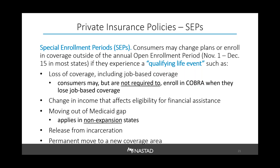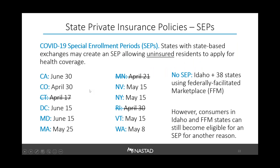Even if someone already receives premium tax credits, when their income is reduced they can still update their marketplace application to see if they're eligible for a higher tax credit amount or for Medicaid. In addition to regular SEPs, a number of states have created SEPs specifically to address uninsurance during COVID-19, giving uninsured residents a special opportunity to apply for health coverage right now, with varying deadlines by state. Only states with state-run exchanges can implement this COVID-19 SEP; people in Idaho and the 38 states using the federal exchange at healthcare.gov don't have this option available, but can still enroll if they qualify for another SEP.